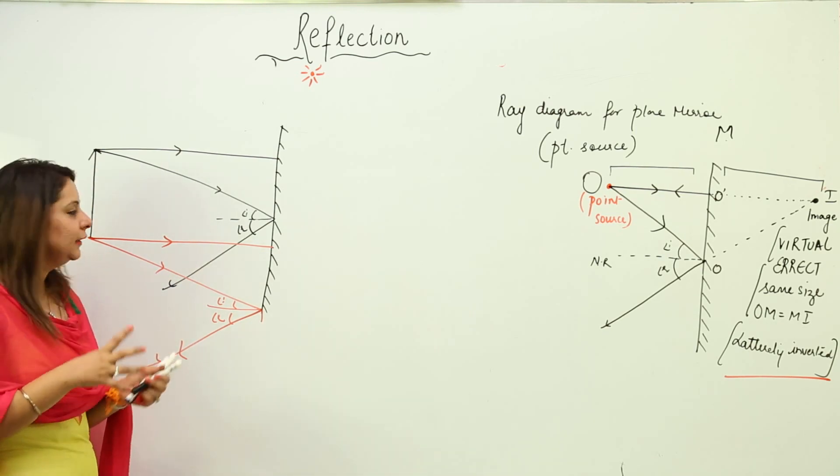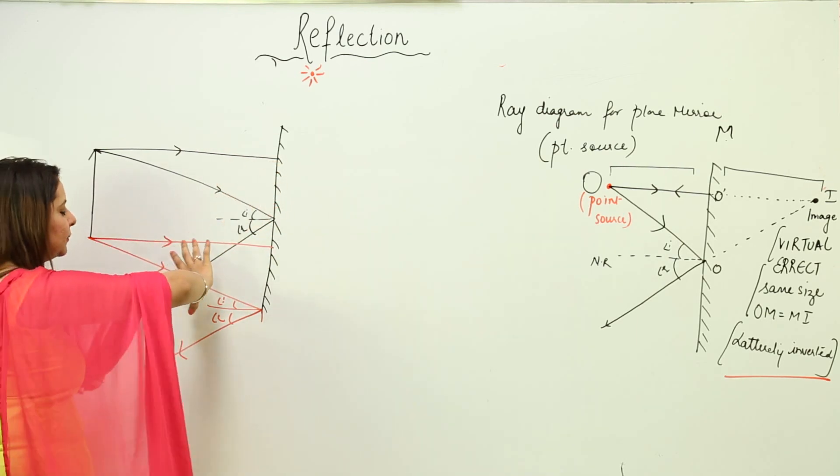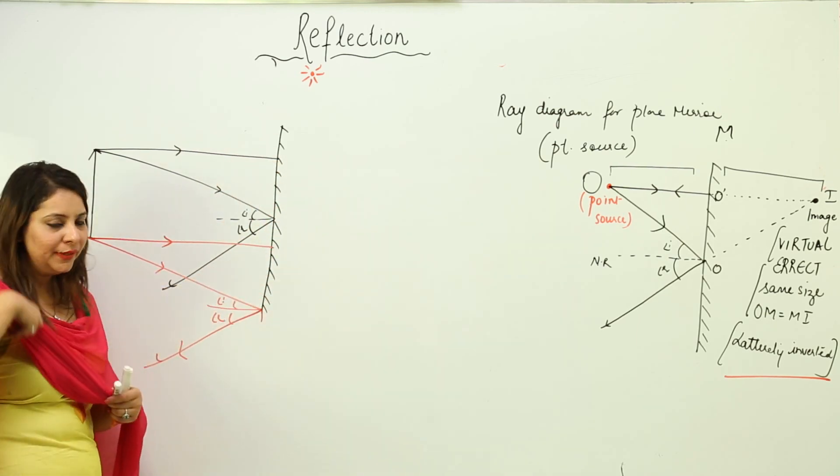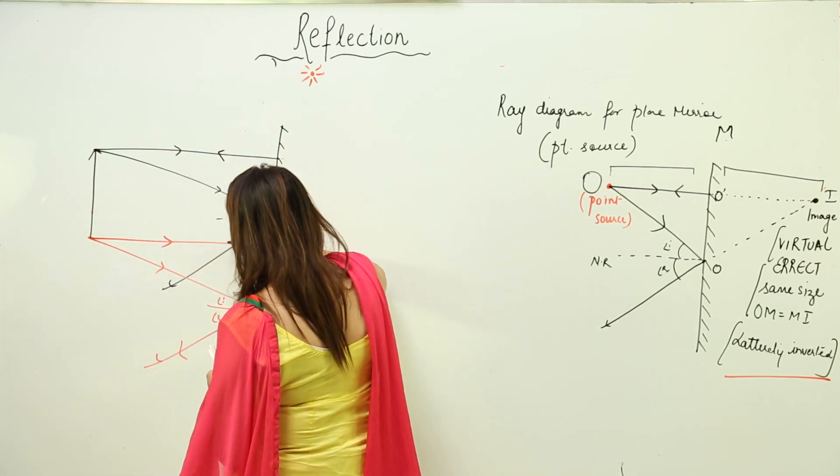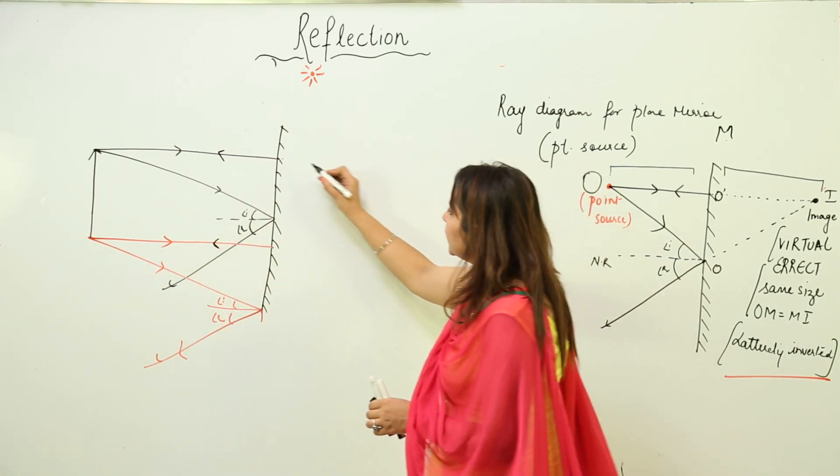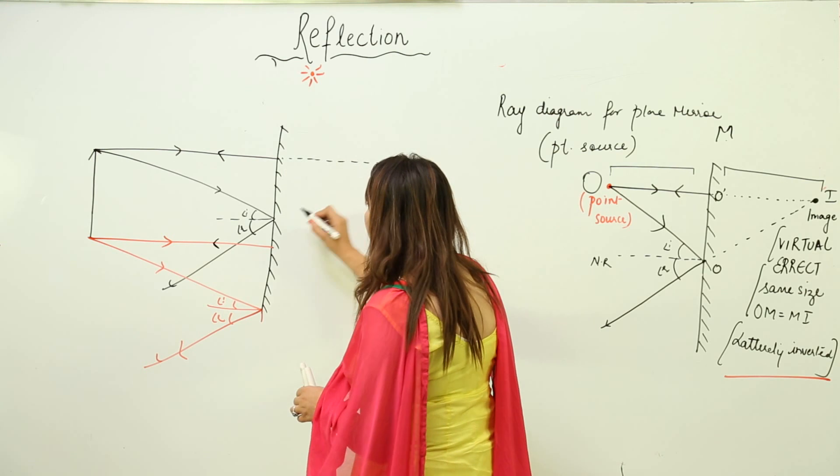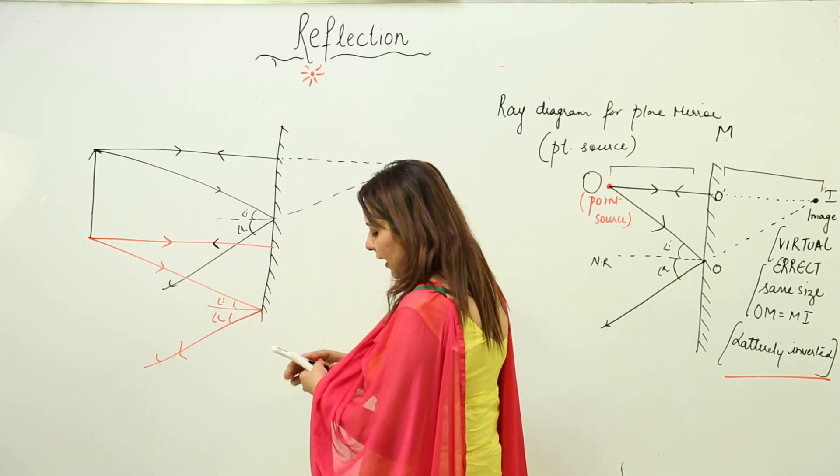Now what to do is make these black rays meet at one point, and make the red rays appear to meet at one point. Just extend them. We know this gets reflected in the same manner we've already discussed, so just extend it like this.